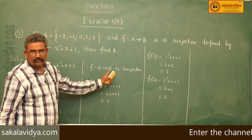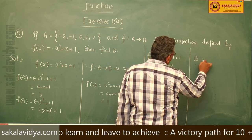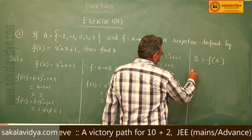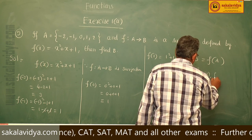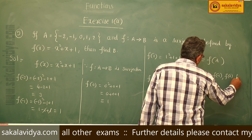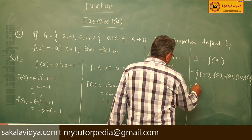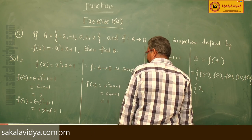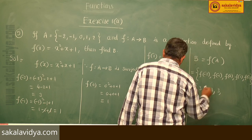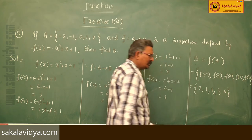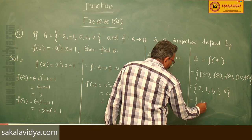Since f maps A to B is a surjection, B equals the range, meaning codomain equals range = f(A). The set of images is: f(-2) = 3, f(-1) = 1, f(0) = 1, f(1) = 3, f(2) = 8. Since elements are not repeated in sets, B = {1, 3, 8}.